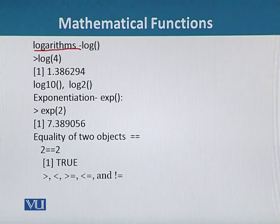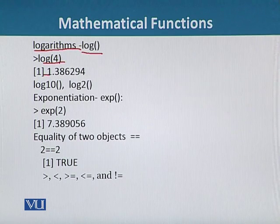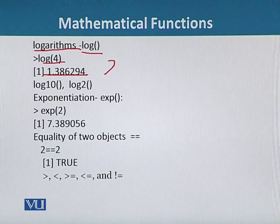Logarithms are calculated using the command log and then two parentheses. If we want to calculate the log of 4, it will calculate the answer 1.386294. The log command gives natural logarithm base e, which is 2.7.